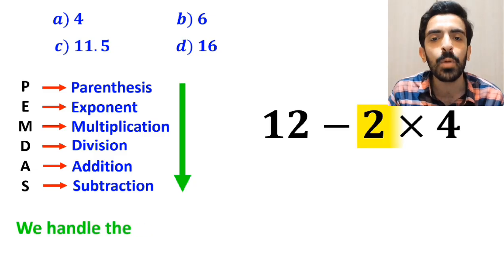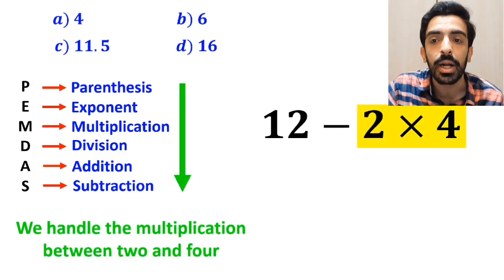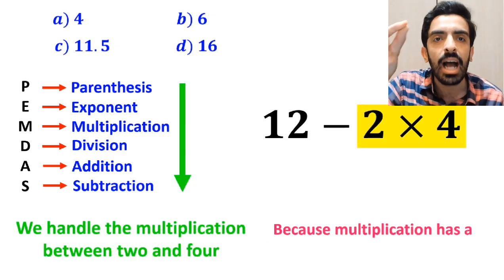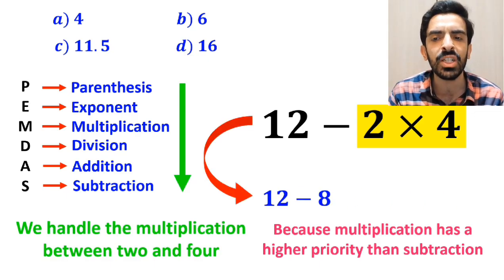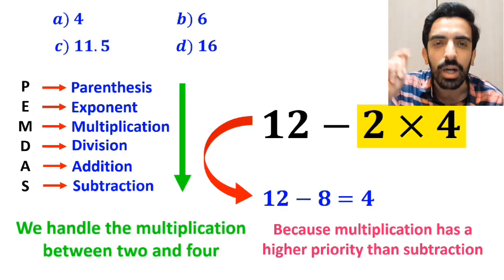In the next step, we handle the multiplication between 2 and 4, because multiplication has a higher priority than subtraction. And this expression simplifies to 12 minus 8, which ultimately gives us the answer 4.